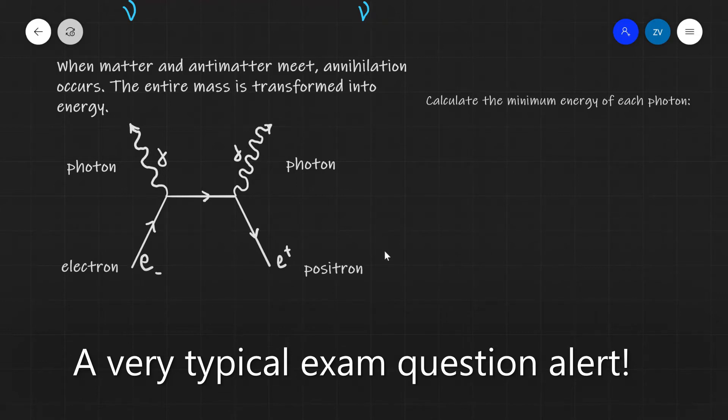So what will the minimum energy of each of those photons be? And this is an incredibly typical question from the A-level physics specification. In order to calculate the minimum energy, we're going to use the most famous equation in the history of physics, E is equal to mc squared.